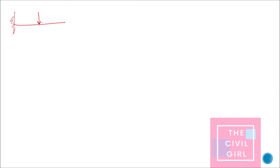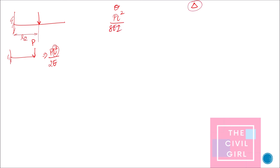Next, consider a cantilever beam subjected to a point load at its midpoint. The approach is similar to the UDL case. For slope: if the load were at the free end, theta would be PL² divided by 2EI; substituting L/2 for L gives theta equal to PL² divided by 8EI.